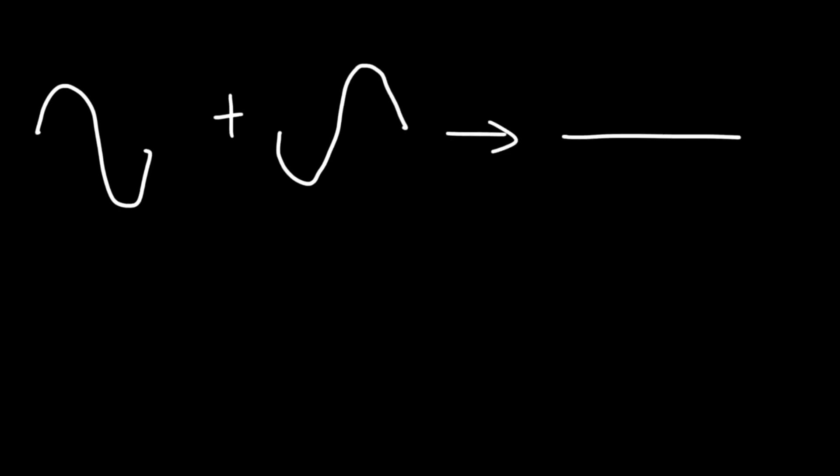But if two waves are out of phase with each other, destructive interference occurs. Instead of getting a bond, you get a node — a region of zero electron density where the probability of finding an electron is essentially zero. According to valence bond theory, a covalent bond is the sharing of electron density between two atoms as a result of the constructive interference of their atomic orbitals.